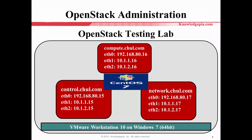For this course, I will prepare a testing lab with three compute nodes. The first will be the control node, the second the compute node, and the third will be the network node. Each node will have three kinds of network interface cards with specific IP addresses. These three computing nodes will be implemented based on VMware Workstation 10 on Windows 7 64-bit.